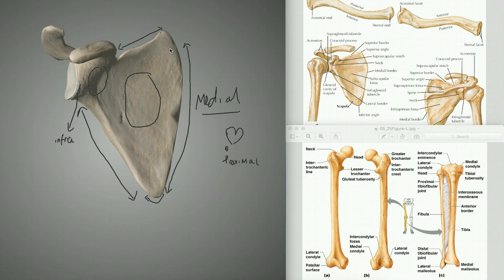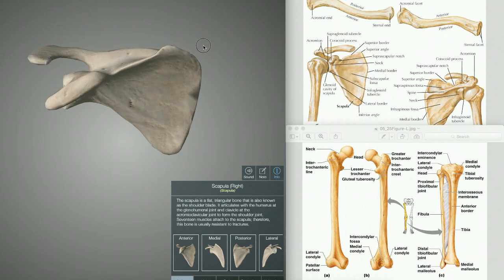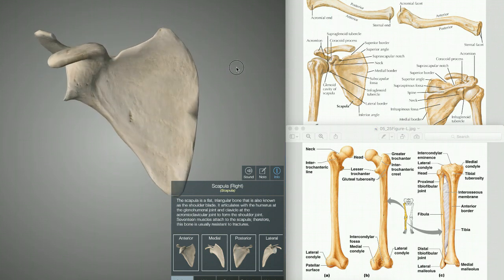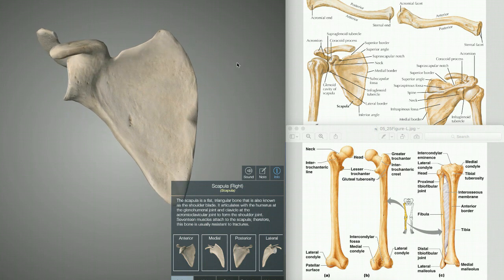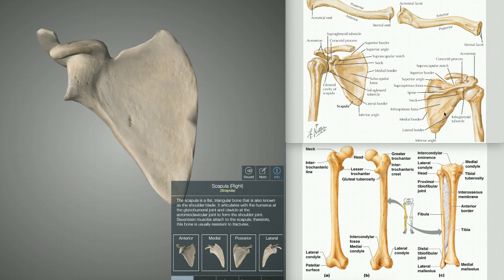Now, what you want to be aware of is this area here. By the way, we're looking at the scapula head-on now. So what we have here is the superior border - I've gone through it - and you have this bit here which is known as the superior angle. Now if I flip this completely around, this is how you would look at the scapula from the back.